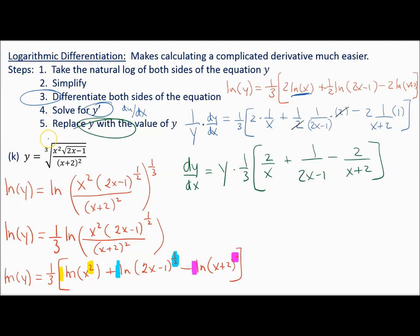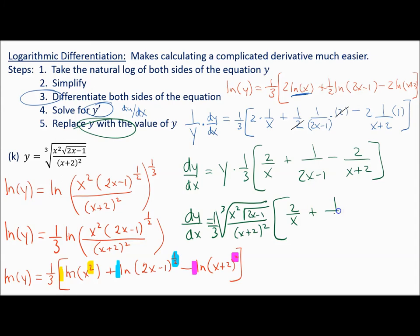I'm supposed to replace y with what y is — the original problem. So dy over dx equals the cubed root of x squared times the square root of 2x minus 1 over x plus 2 squared, times 1 third, times 2 over x plus 1 over 2x minus 1 minus 2 over x plus 2.